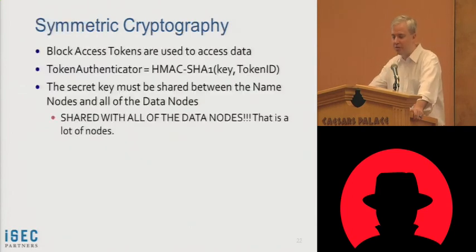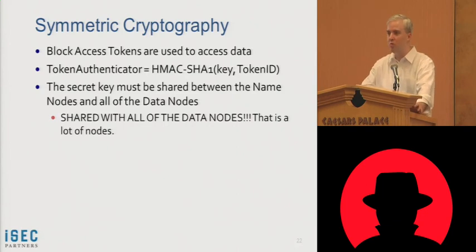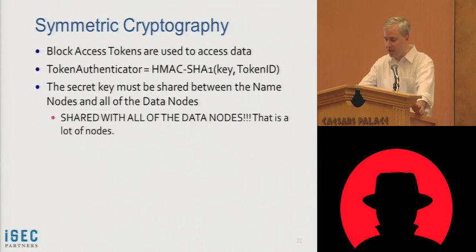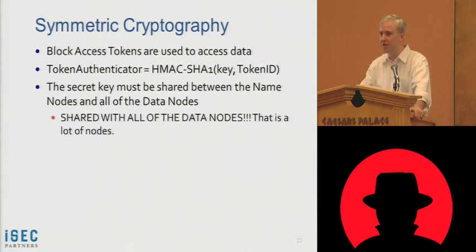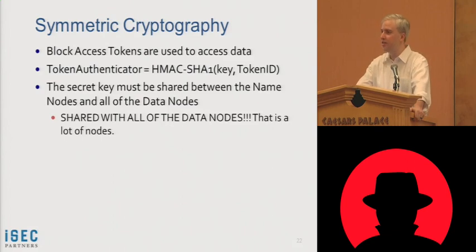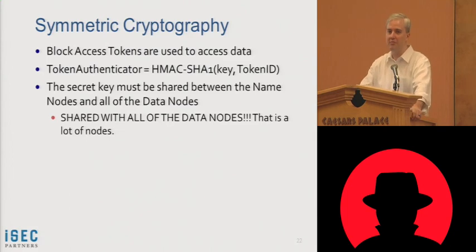The symmetric cryptography relies on HMAC-SHA1 — a cryptographic hash function combined with a secret key. For block access tokens, depending on the size of your cluster, there are organizations with 30,000-plus nodes split across 20 clusters. These keys get transmitted in clear text over the network, and they get re-keyed from time to time — so if you miss it the first time, keep listening.